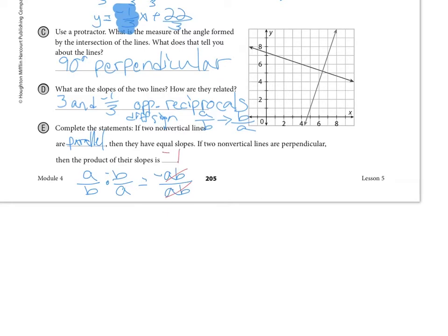So opposite reciprocal slopes have a product of negative 1 that means they are perpendicular and if the slopes are equal then that means the lines are parallel. Those are the two major distinctions we need to keep in mind as we go through the rest of our examples.